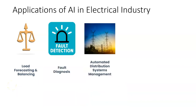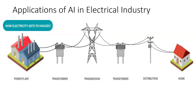The next one involves fault diagnosis and automated distribution systems management. To understand distribution, let's look at this diagram on screen. There is a power plant which buys electricity from different sources — the power plant itself could also be producing electricity. Then there is a transformer, after which you have transmission. The transformer is used again, and then you have the distribution setup before electricity finally reaches homes. This is the end-to-end view of distribution in the electrical industry.